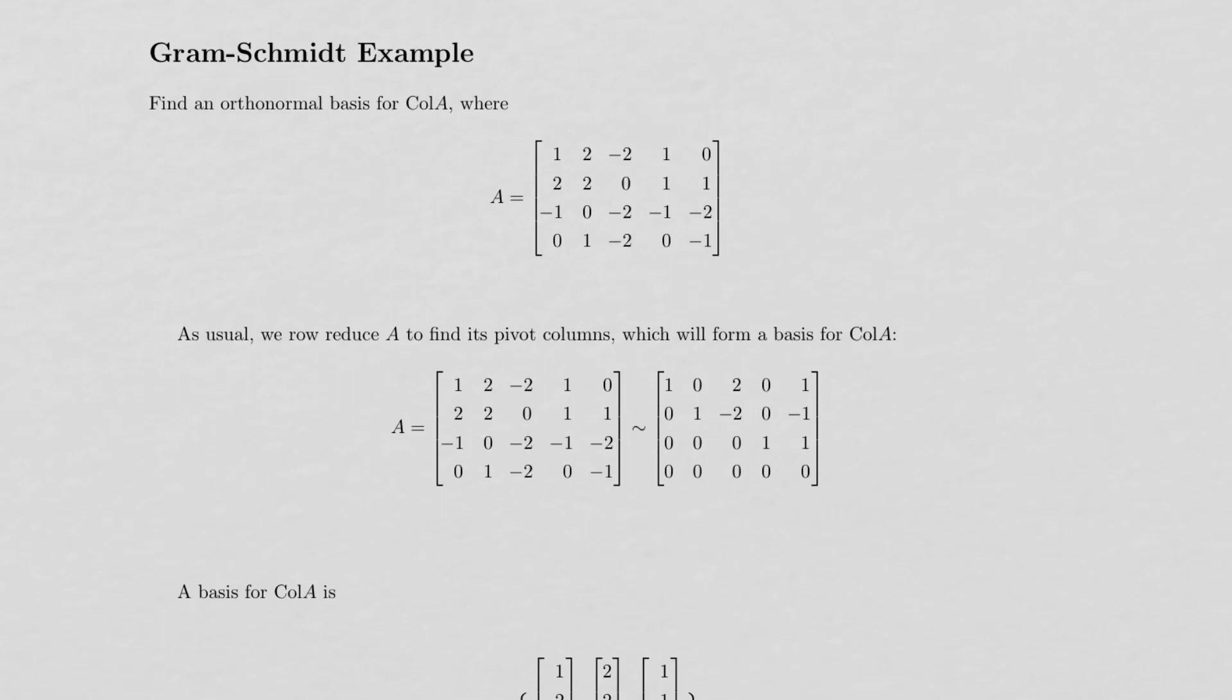Here are a couple of examples that use the Gram-Schmidt orthogonalization process or algorithm. The first one is asking us to find an orthonormal basis for the column space of this matrix A here.